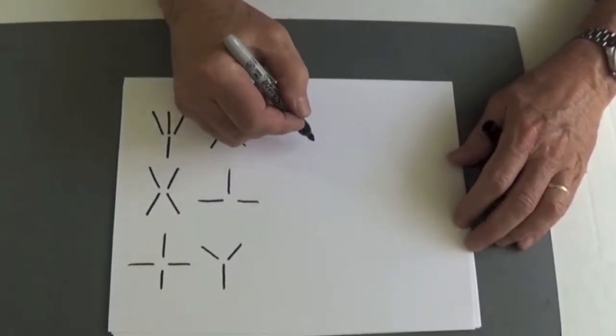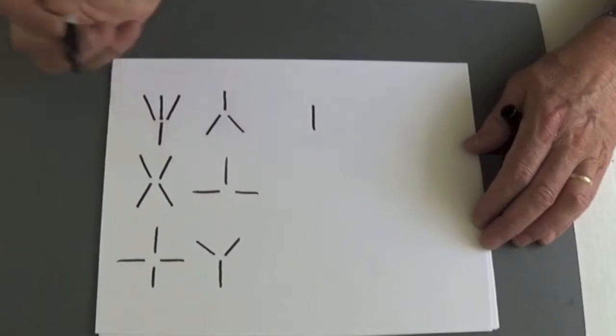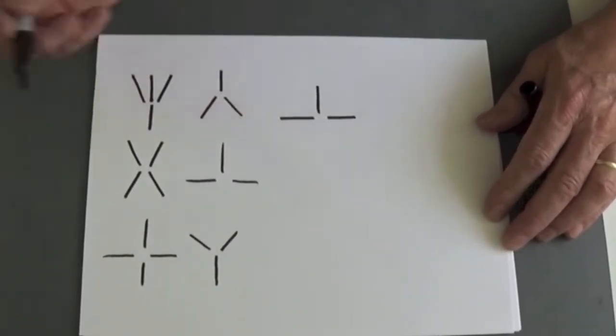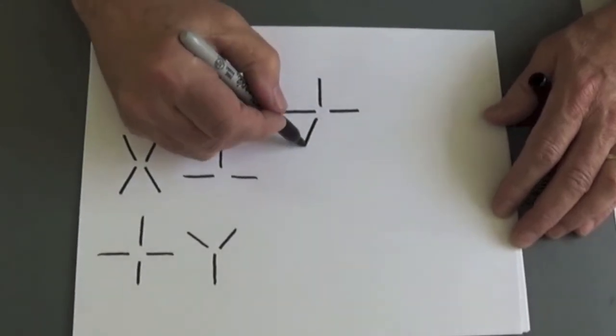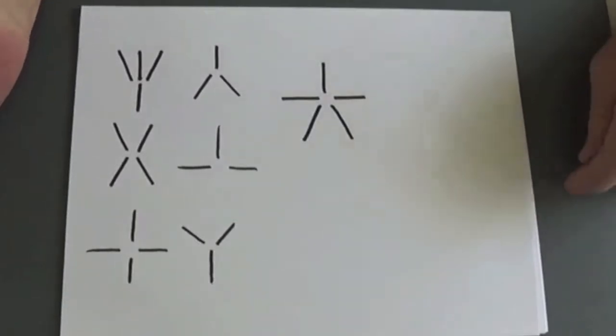Now here would be a five pattern. Just think of a star or a person, a head, two arms, and two feet. Many, many flowers use the five pattern.